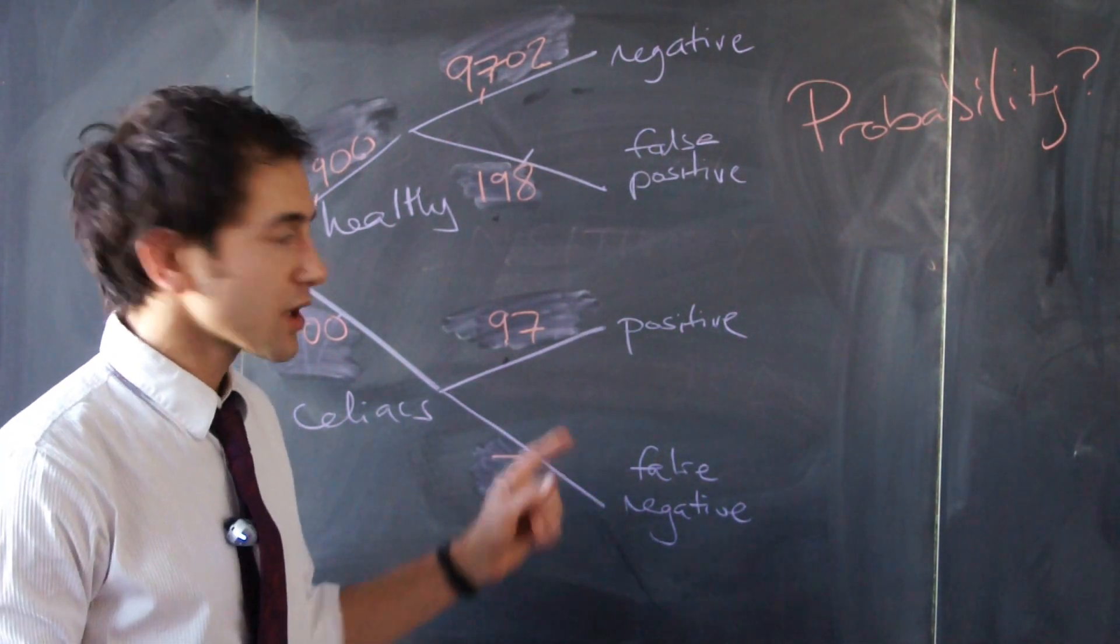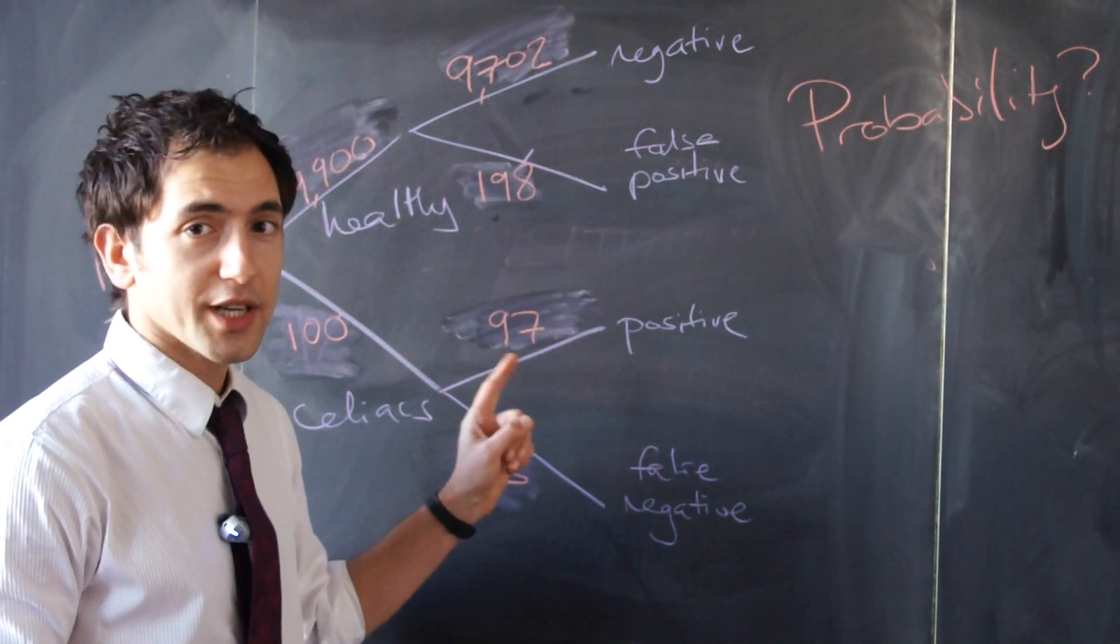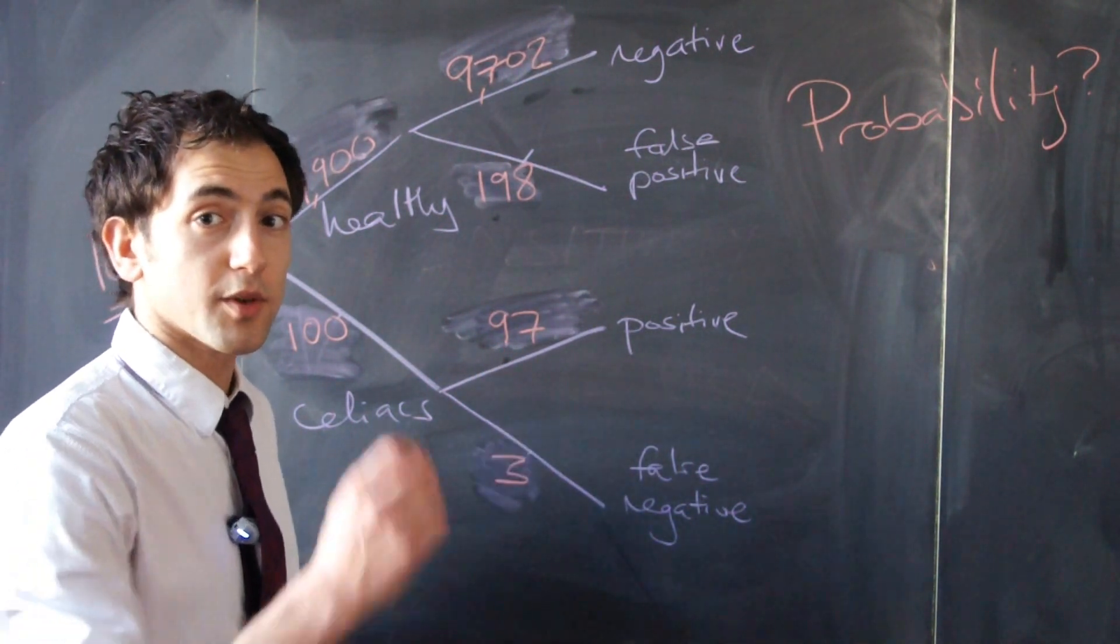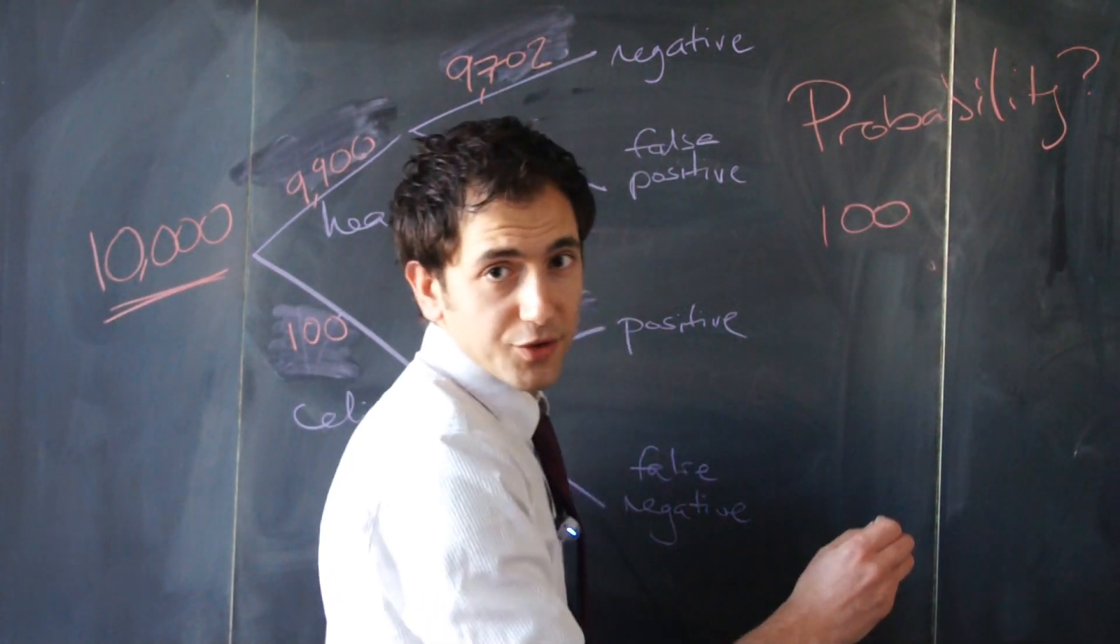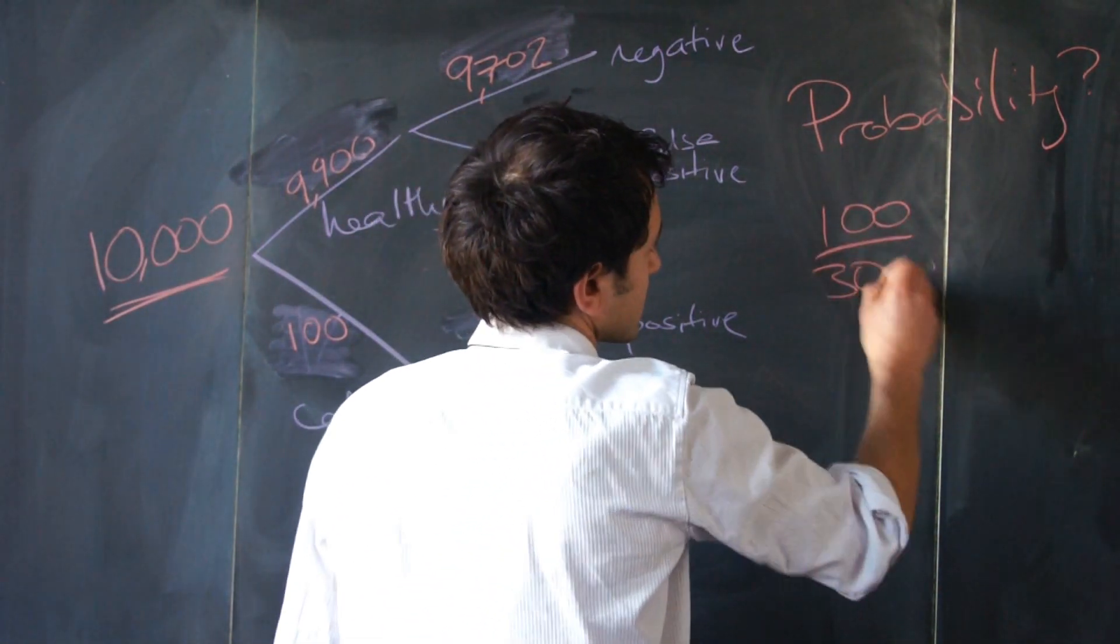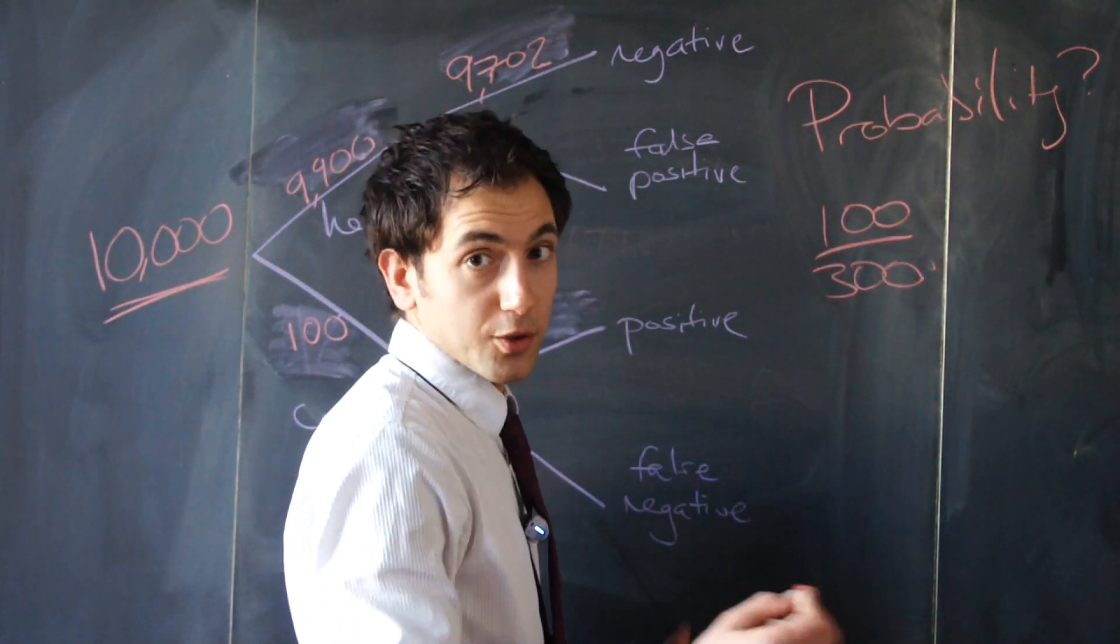Of those 300, only around 100 actually have the disease. So our probability is 100 out of 300, or one third.